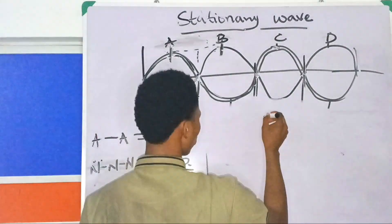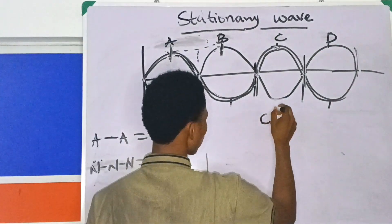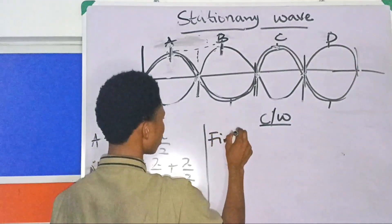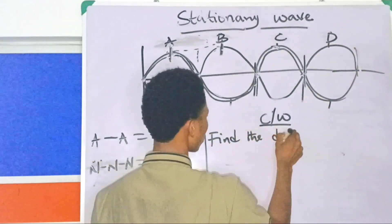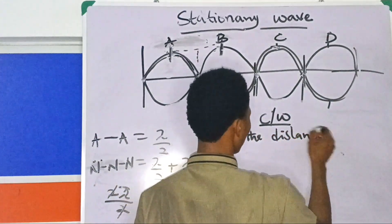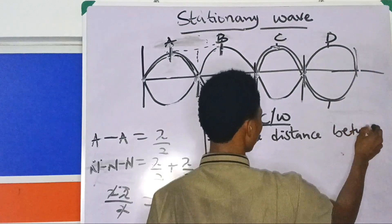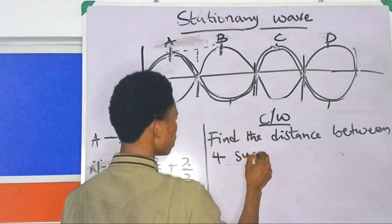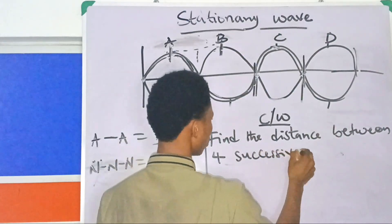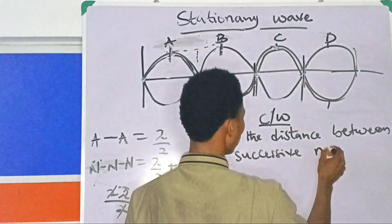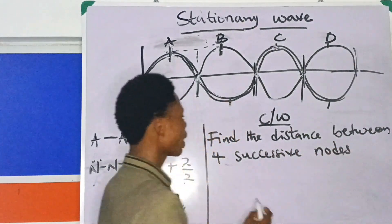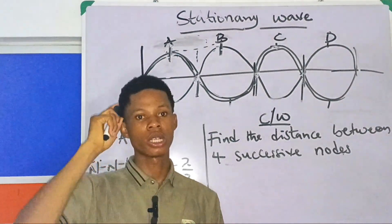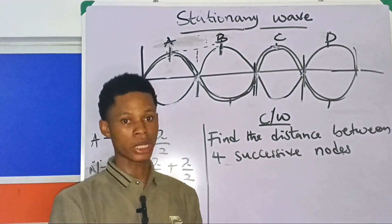Now let me give you a question to try and drop your answer in the comment section. Find the distance between four successive nodes. Try this and drop your answer in the comments. I will be doing the next video on progressive waves.